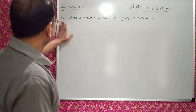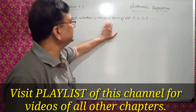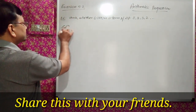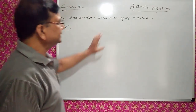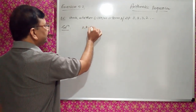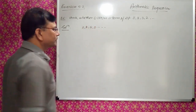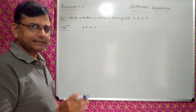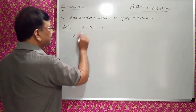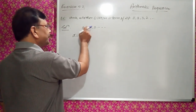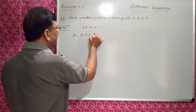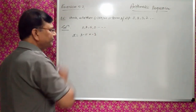Question number 6: check whether -150 is a term of the AP 11, 8, 5, 2, ... or not. We find the common difference: D = 8 - 11 = -3, and 5 - 8 = -3, 2 - 5 = -3. So common difference D = -3, and first term A = 11.